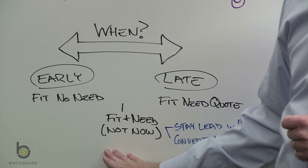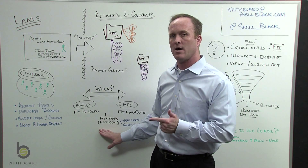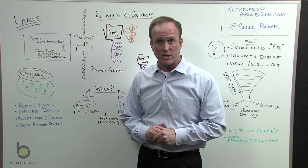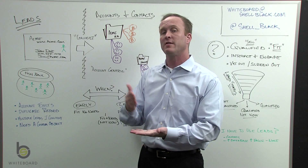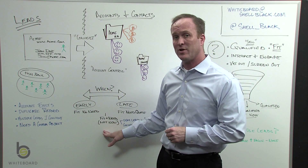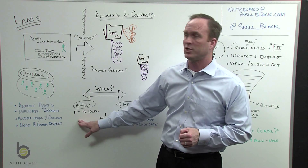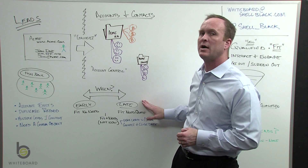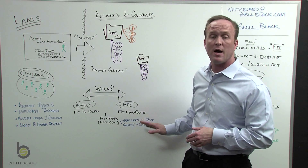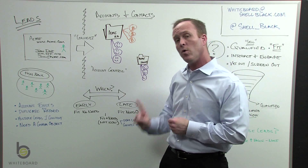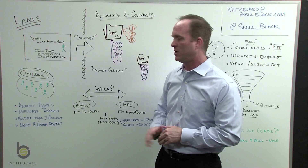And then there's the squishy middle — they have fit, but there's a need that's not now. Let me give you an analogy: say your company leases cars. You find someone who has a current lease, so they're a fit, but that lease doesn't come due for two years. You have a choice: convert them early and track an opportunity with a close date two years out, or let them exist as a lead with a follow-up task, and convert when the lease is about to expire.